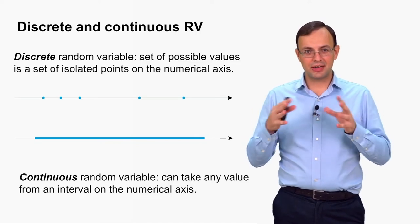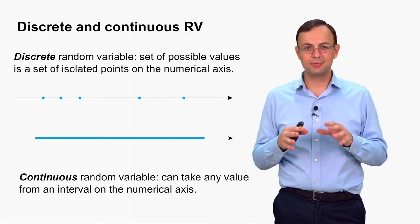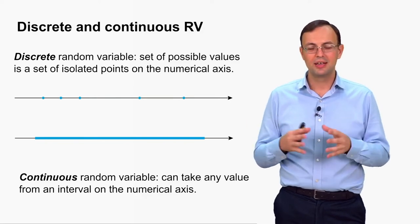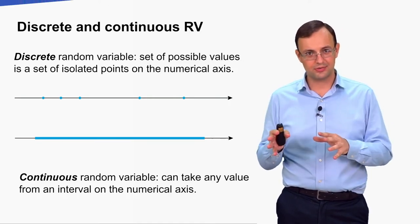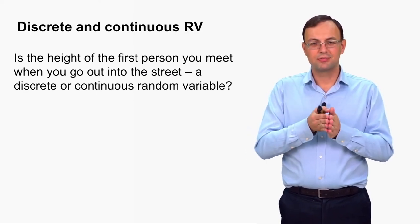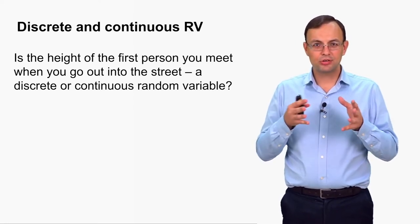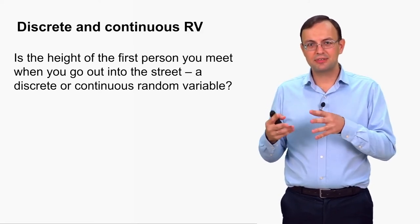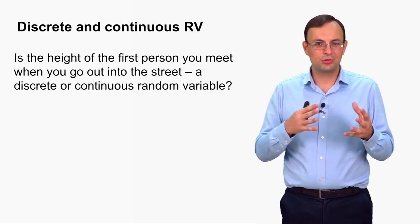There are also hybrid random variables that are partially discrete and partially continuous, but we won't consider such types in our course. So let's say that random variables can be either discrete or continuous. Sometimes the border separating discrete from continuous random variables is not so very strict, and we can treat a random variable as discrete or continuous according to our needs.